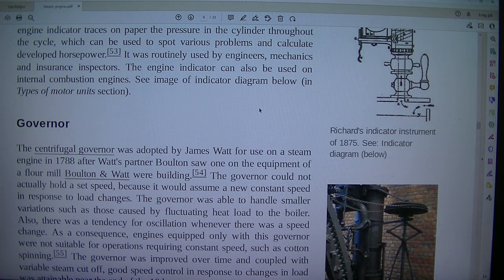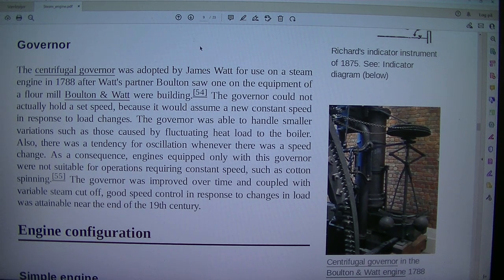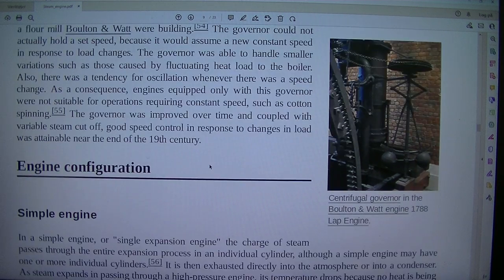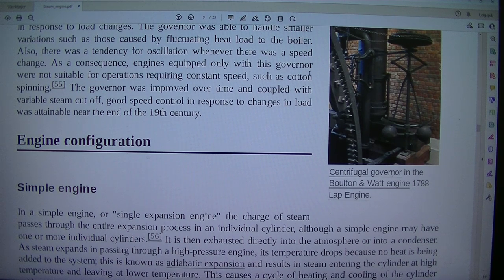Centrifugal governor in the Bolton and Watt engine, 1788. The centrifugal governor was adopted by James Watt for use on a steam engine in 1788 after Watt's partner Bolton saw one on the equipment of a flour mill Bolton and Watt were building. The governor could not actually hold a set speed because it would assume a new constant speed in response to load changes. The governor was able to handle smaller variations such as those caused by fluctuating heat load to the boiler. Also, there was a tendency for oscillation whenever there was a speed change. As a consequence, engines equipped only with this governor were not suitable for operations requiring constant speed, such as cotton spinning. The governor was improved over time and coupled with variable steam cutoff. Good speed control in response to changes in load was attainable near the end of the 19th century.